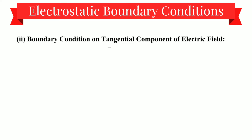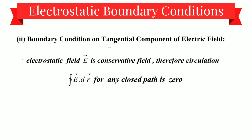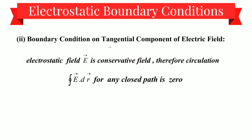Now coming to the next part: boundary conditions on the tangential component of electric field. We know that the electrostatic field E is a conservative field, therefore the circulation — the closed integral of E·dr for any closed path — is zero. We use this property for determination of boundary conditions on tangential components of the electrostatic field.